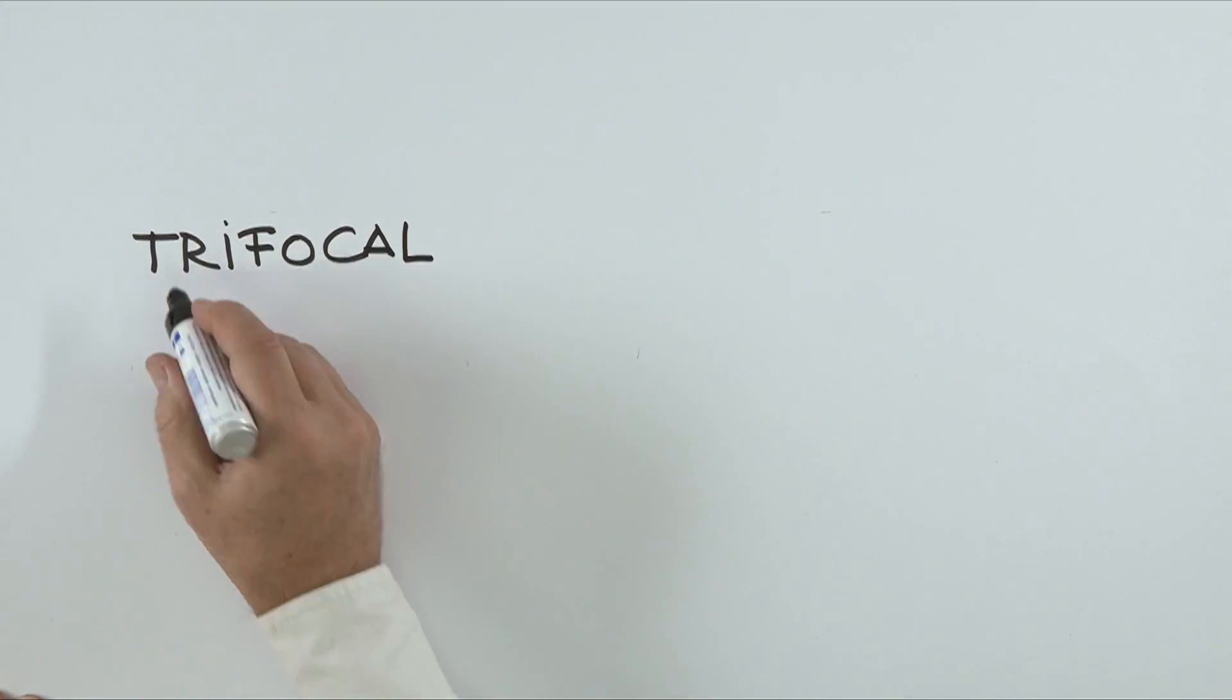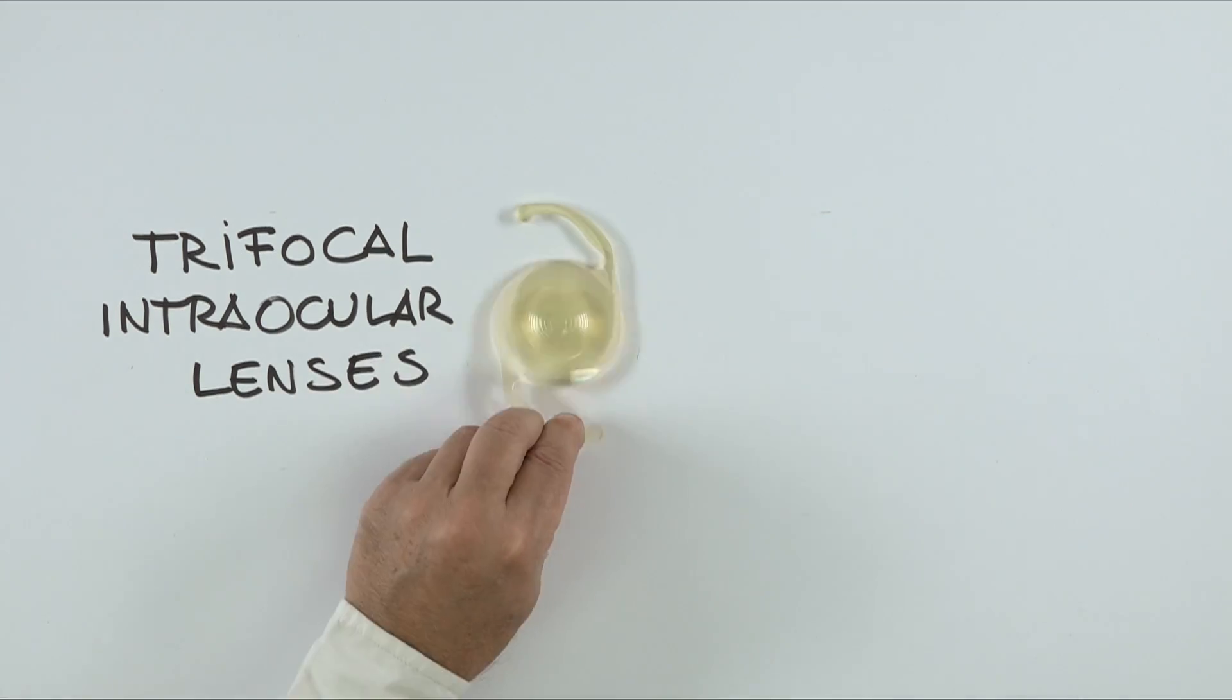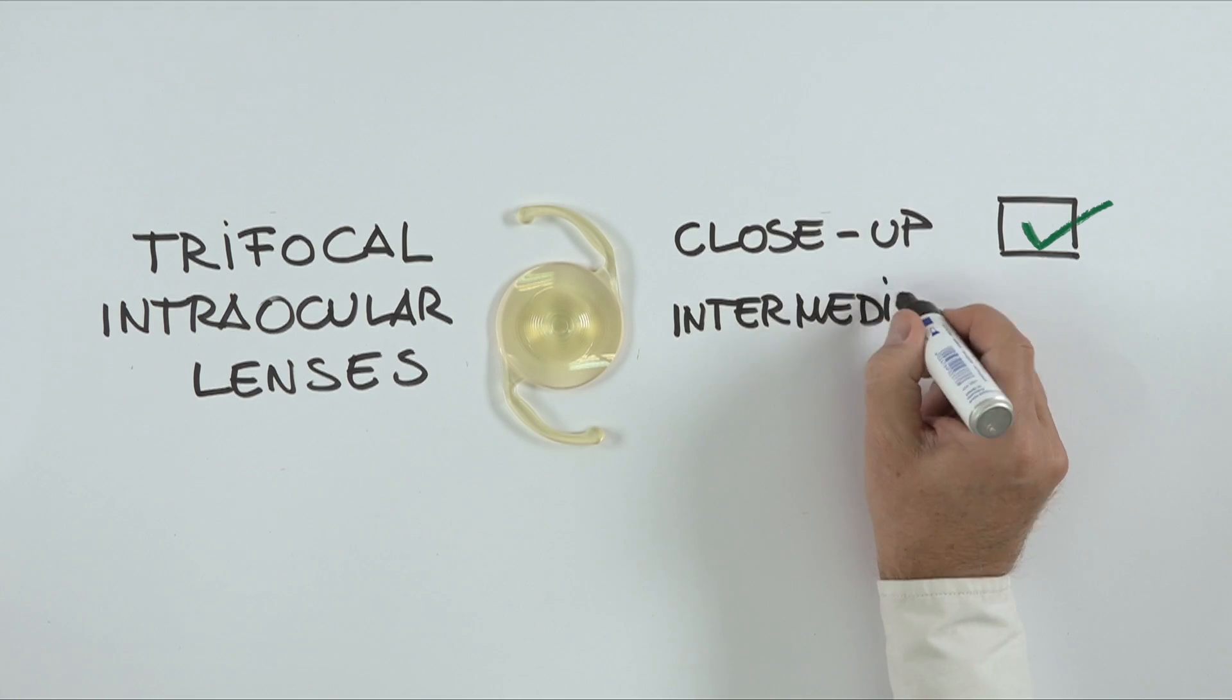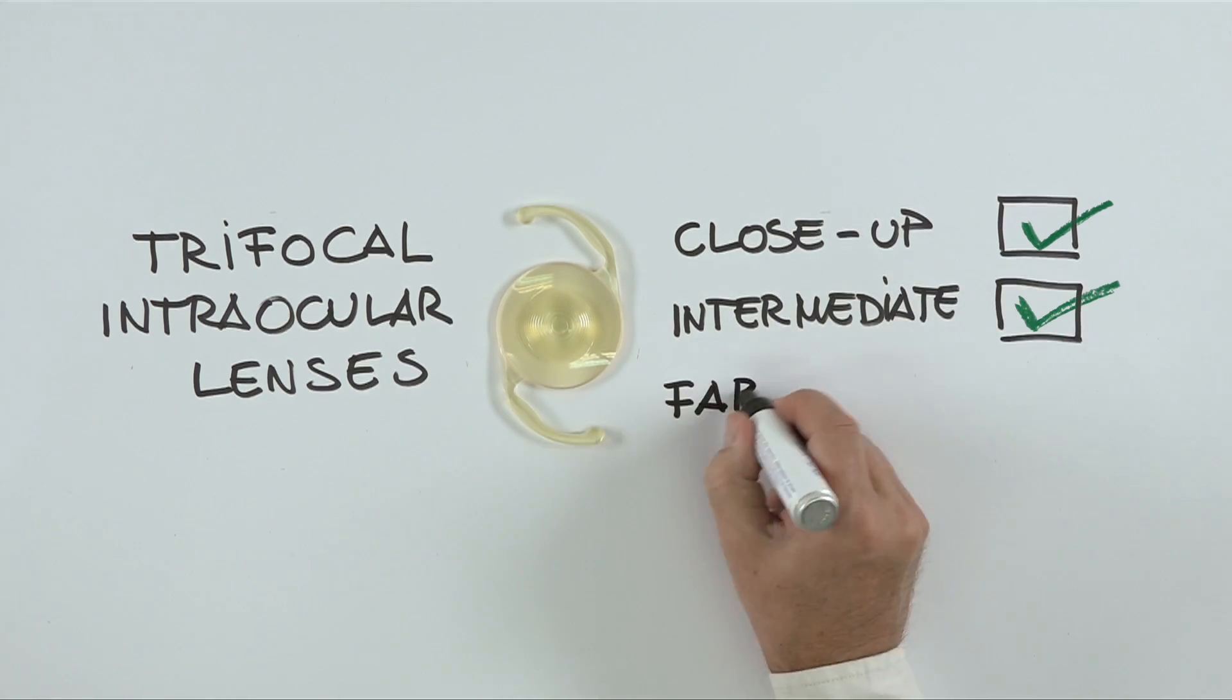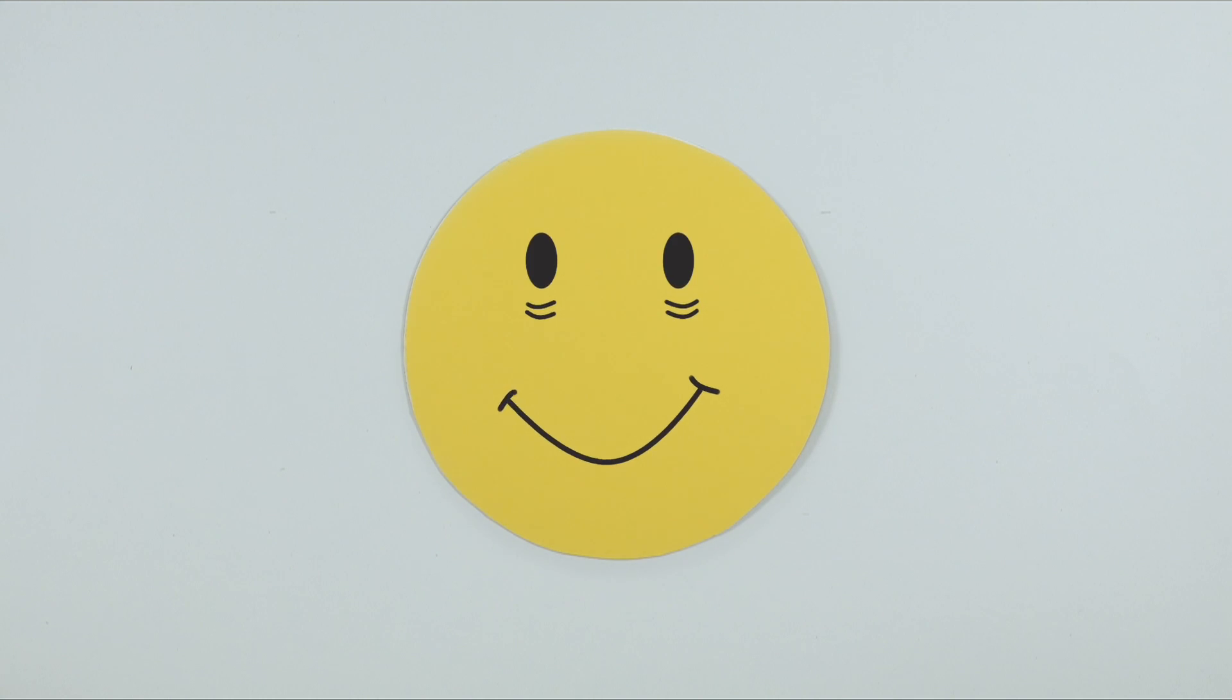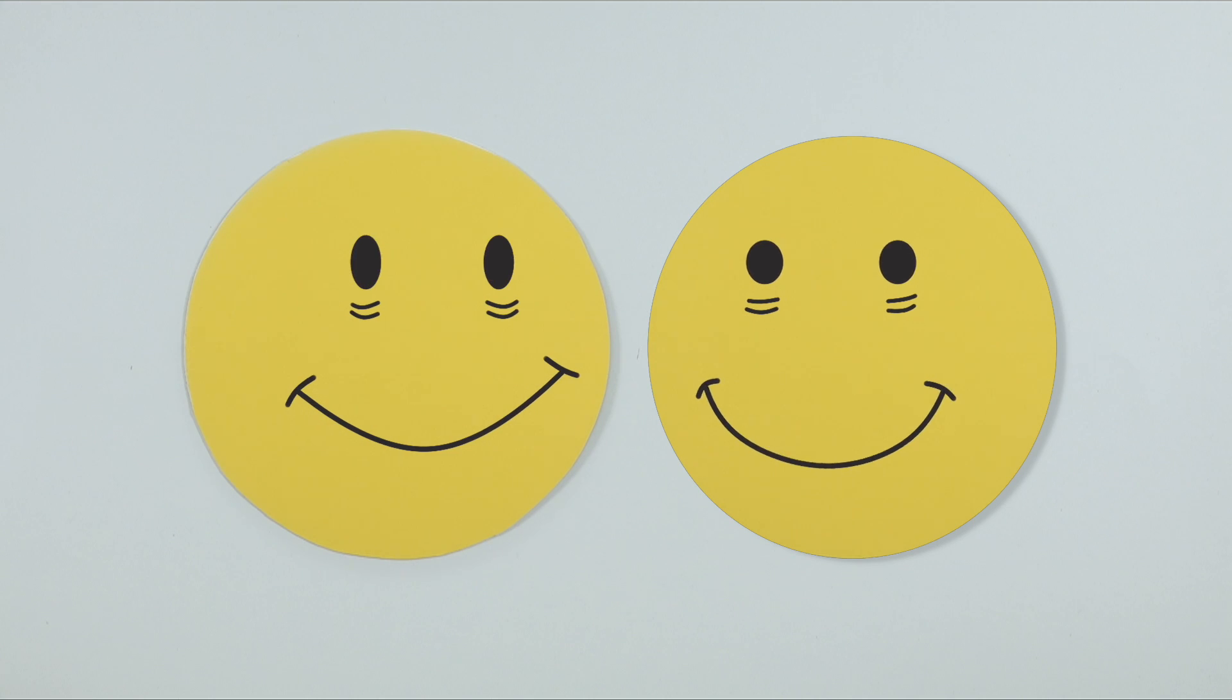In short, with good trifocal intraocular lenses, the aim is to significantly reduce your dependence on glasses, reestablishing a continuous range of vision from close up, intermediate distances, and far off. That is, clearly improving the quality of your vision for all those many years to come.